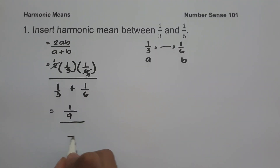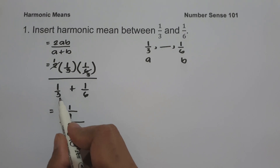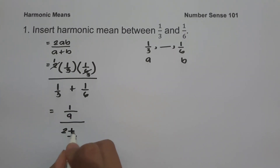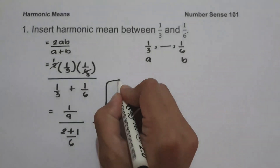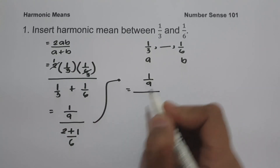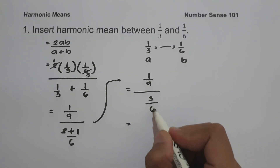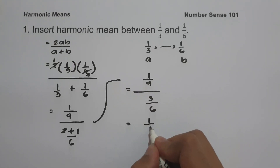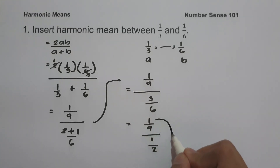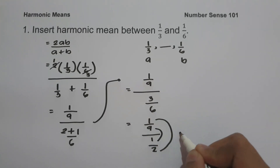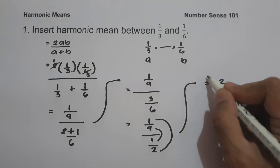Using 6 as the LCM of 3 and 6 for the denominator: 6 divided by 3 is 2, times 1 is 2; plus 6 divided by 6 is 1, times 1 is 1. So we have 1 over 9 divided by 2 plus 1, that is 3 over 6. Since 3 over 6 simplifies to one half, we get 1 over 9 divided by one half. Multiplying: 1 times 2 is 2, and 9 times 1 is 9. So the answer is 2 over 9.